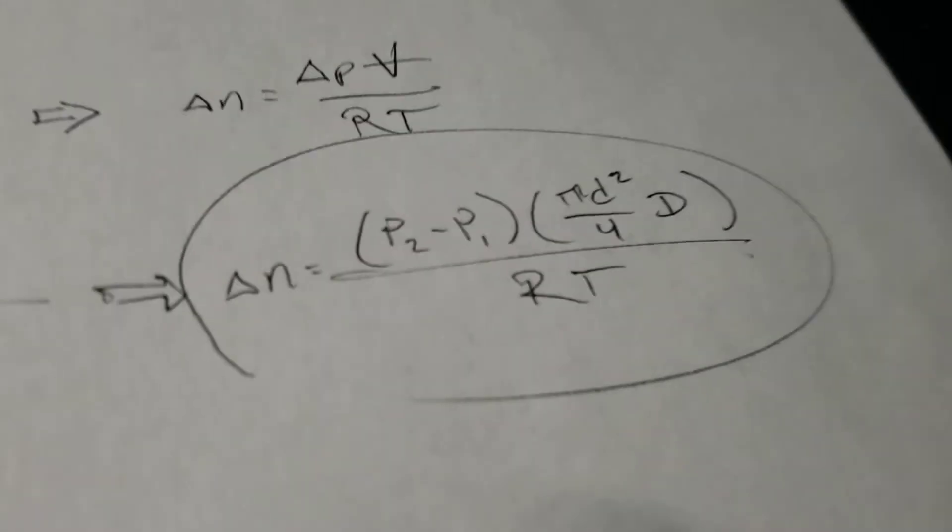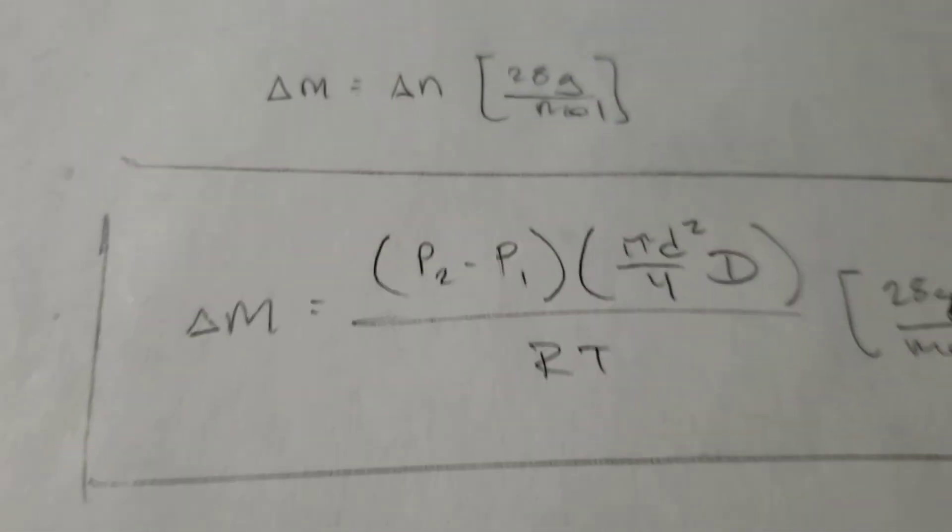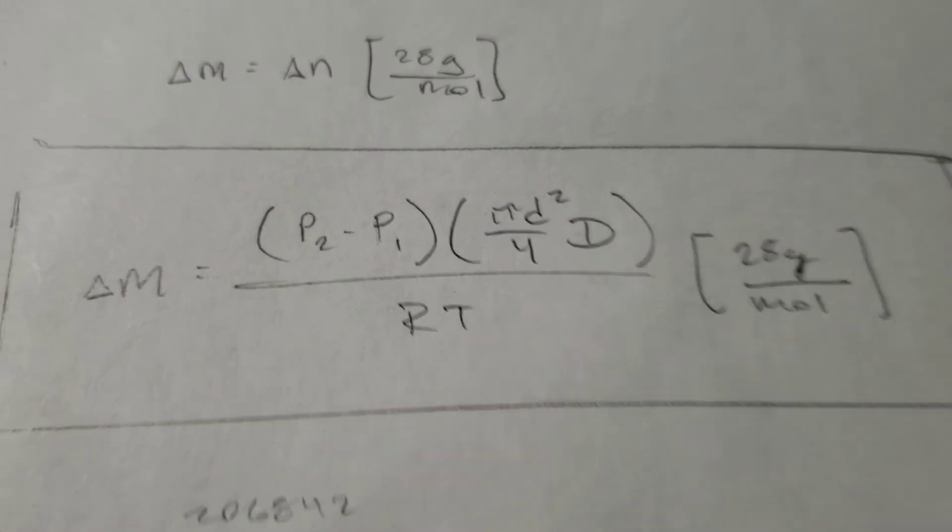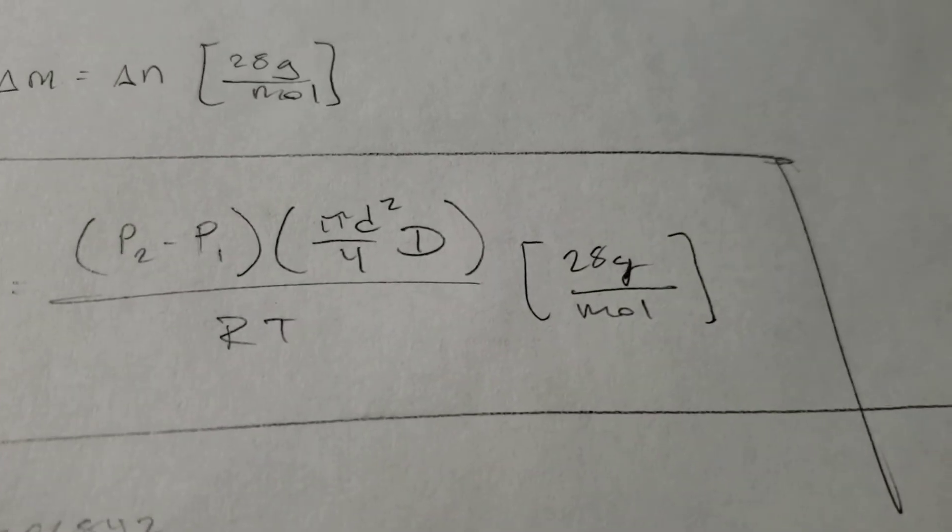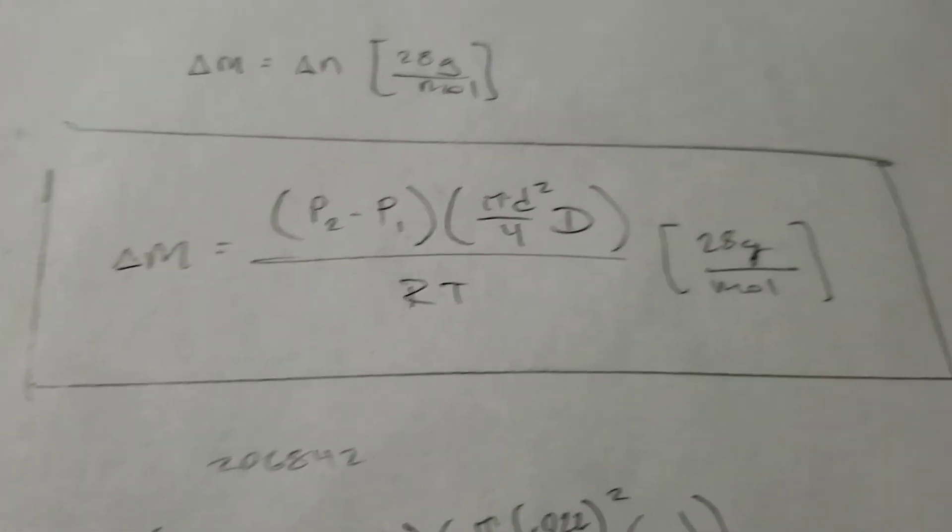So, substituting this in for delta N in this equation gives us the change in mass is equal to P2 minus P1 times pi D squared over 4 times circumference over RT times 28 grams per mole, which is, again, the molar mass of nitrogen.